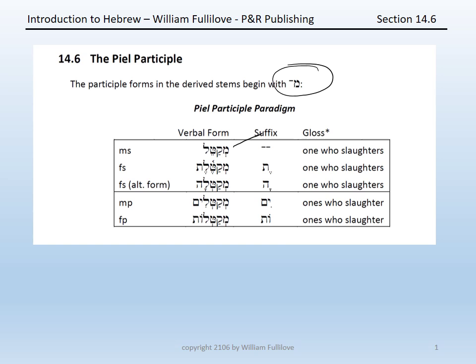MCATEL for the masculine singular, the two potential forms for the feminine singular — either MCATEL-et or MCATEL-ah — in the masculine plural MCATEL-im, and in the feminine plural MCATEL-ot. You will note that again the suffixes are those to which you are already used, because you have learned the participle paradigm with the CAL.